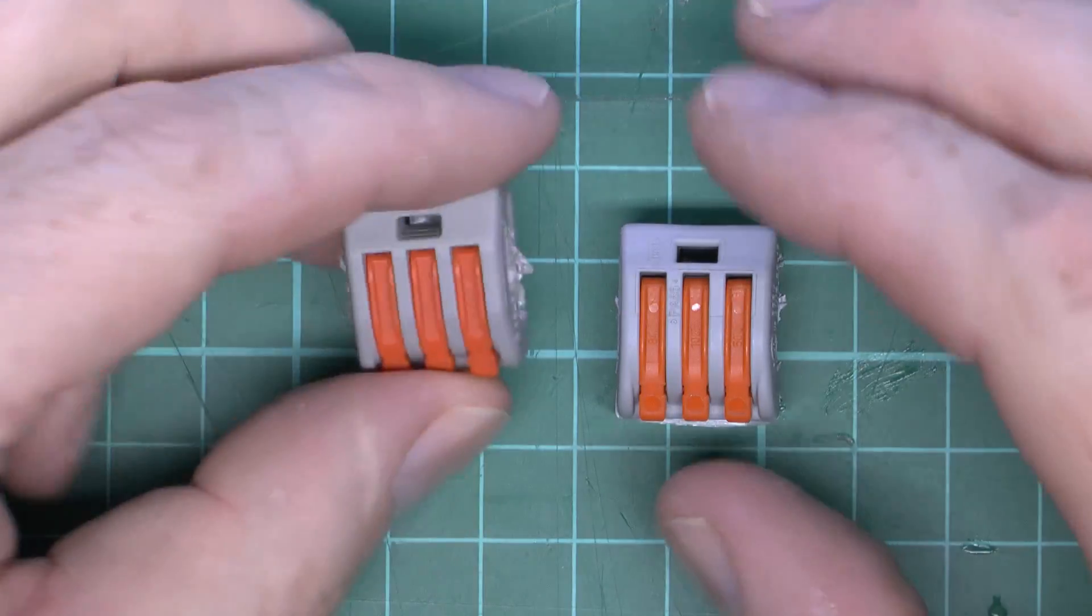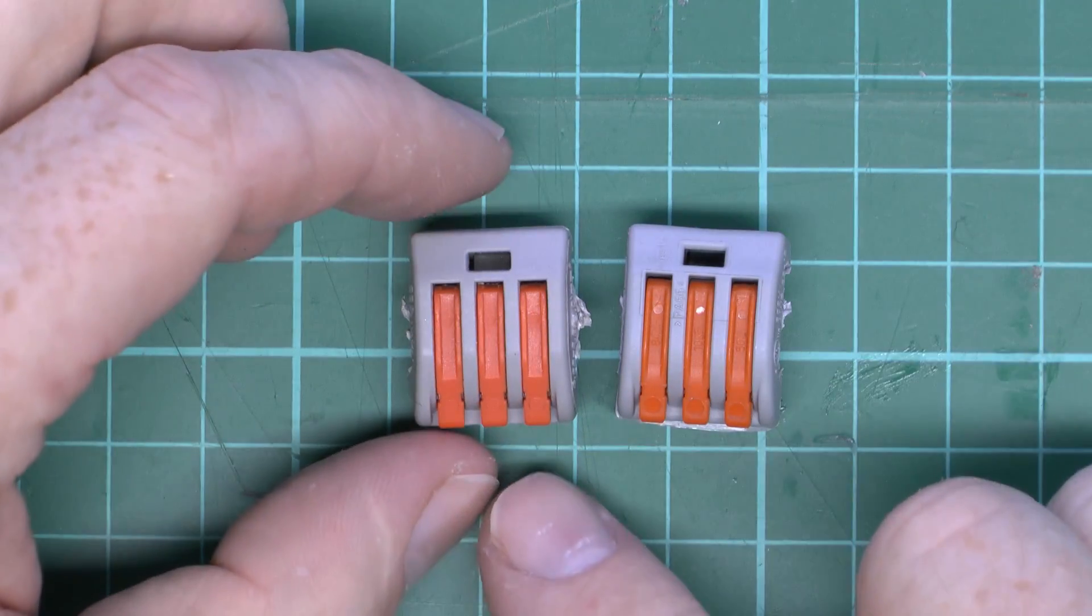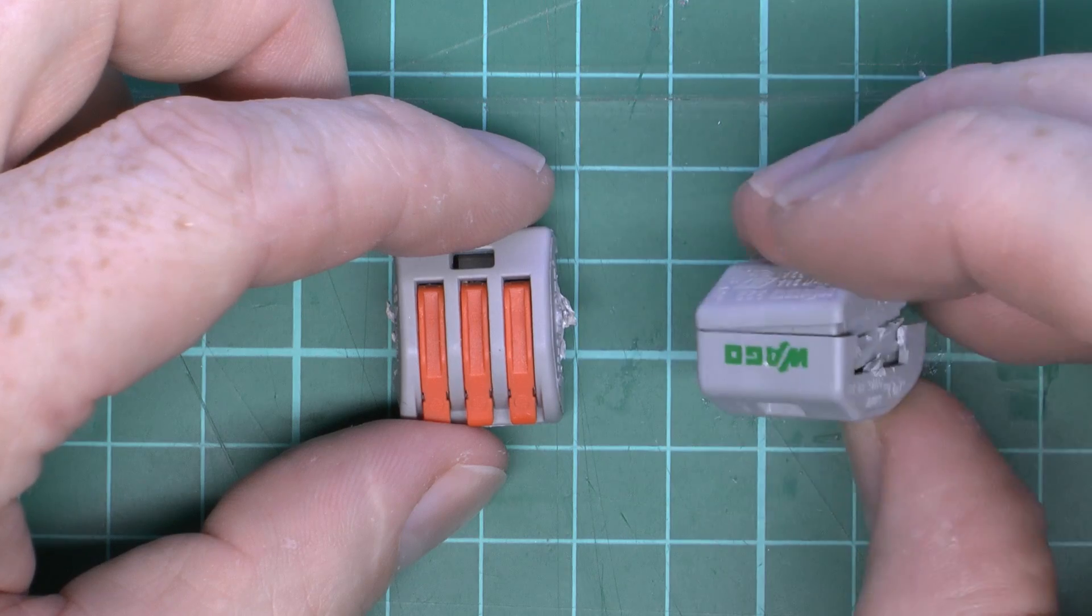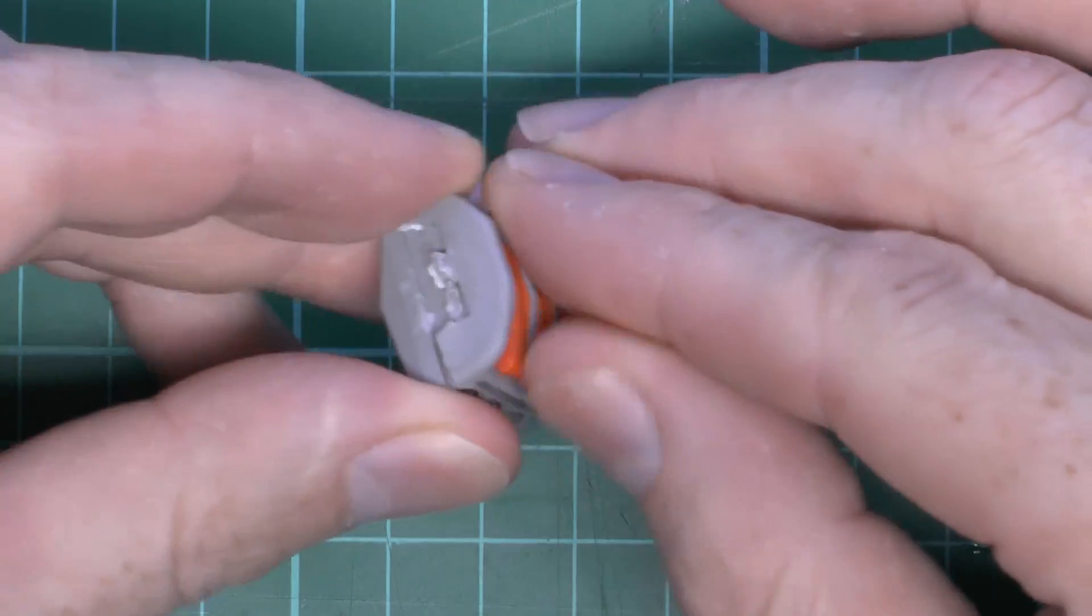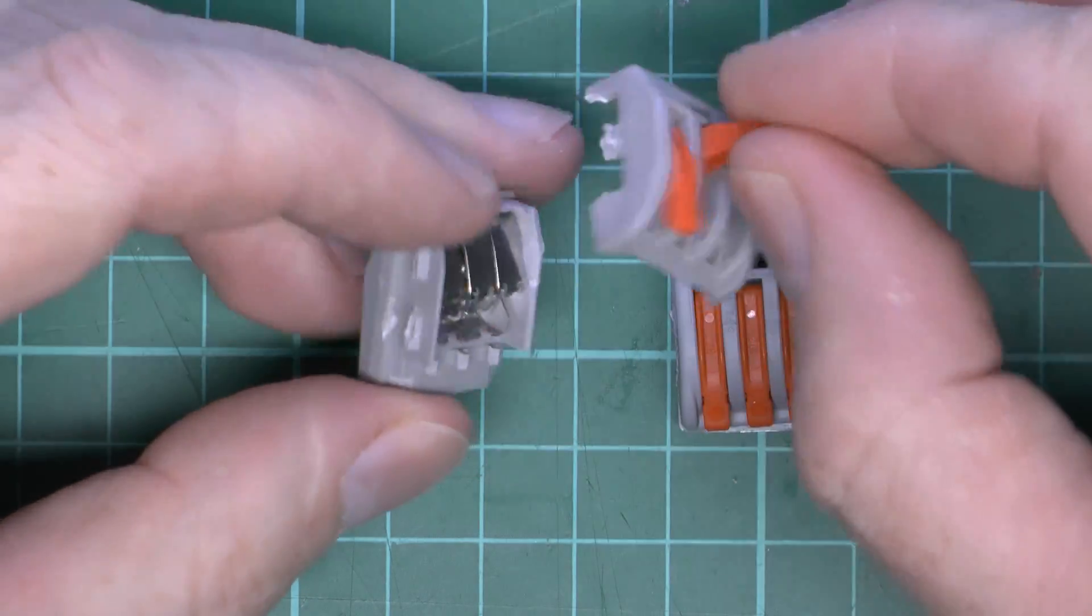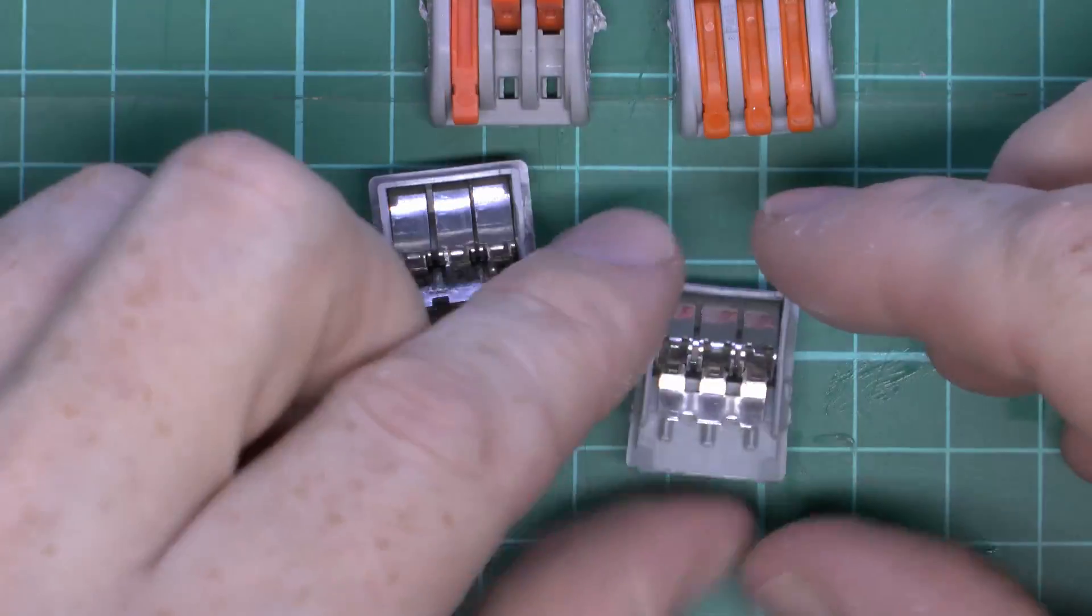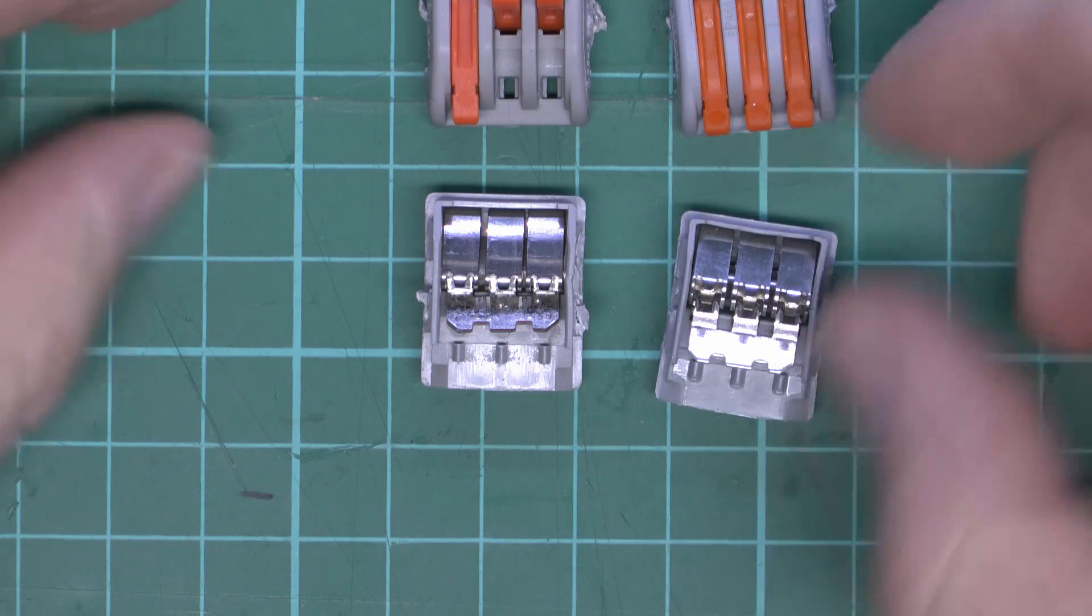Here are the two I've cut the side tabs off, it's just easier than trying to pry the thing open. Here we've got the other brand, and this is the actual WAGO here on the right. Let's just open these up. That's the contents there, so a pretty similar appearance to start with.